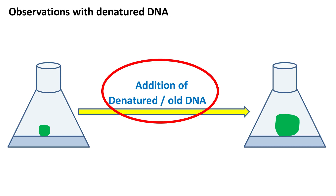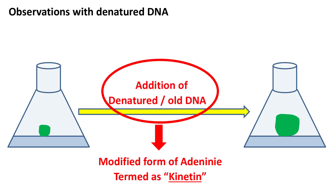This new compound was a modified form of adenine, and it was termed as kinetin. Kinetin is a form of cytokinine.